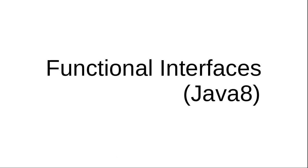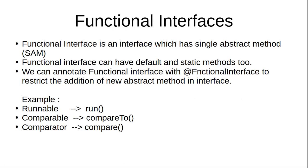Welcome to Point to Point channel. Today I will discuss functional interfaces, which were introduced in Java 8. A functional interface is an interface in which we have a single abstract method. However, we can also have default and static methods inside a functional interface.